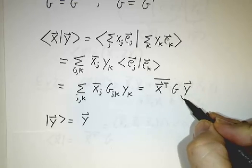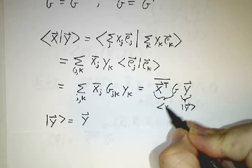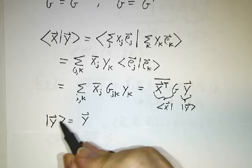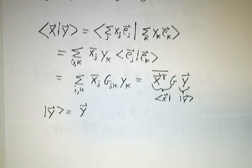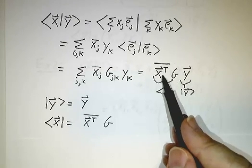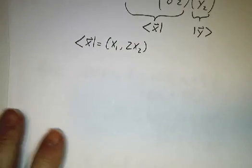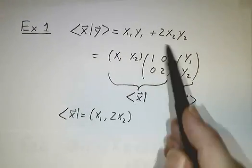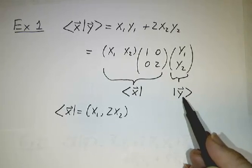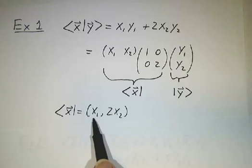So this bit we call our ket, and this whole bit is what we call our bra. The ket is just like with the standard inner product. The ket y is the vector y, end of story. But the bra is different. The bra is x transpose conjugate times the metric matrix. So for instance, in our first example, the inner product of x and y is given as this row times this matrix times this column. The column is what we call the ket. The bra is the row times the matrix, which if you multiply it out, gives you x1, 2x2.